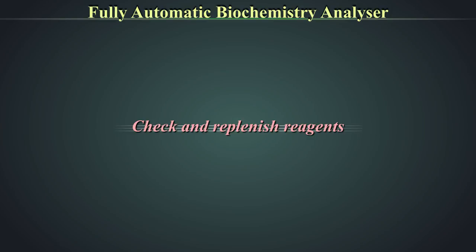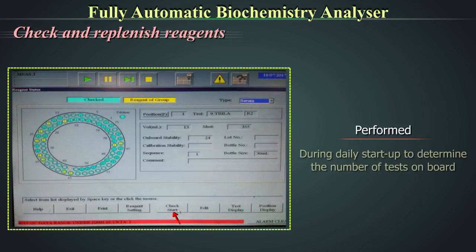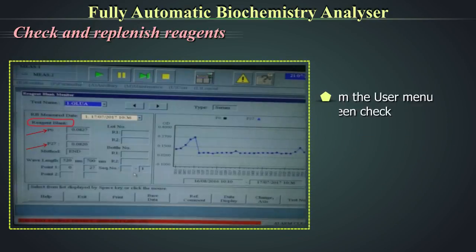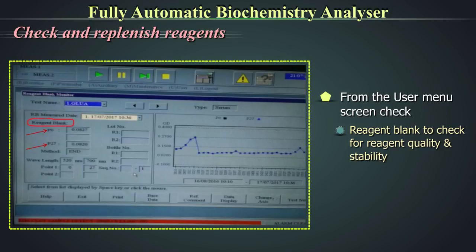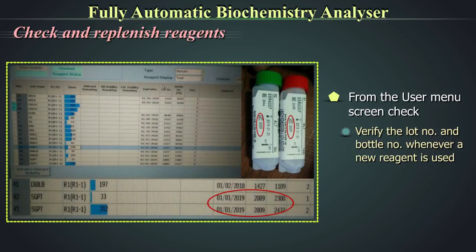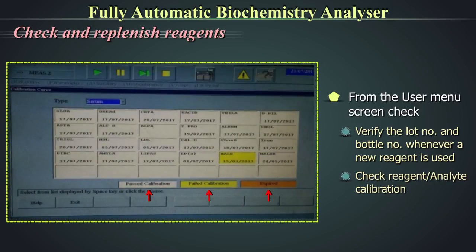A reagent check should be performed during daily startup to determine the number of tests on board and to update the status of the reagents. From the user menu screen, check the reagent blank for reagent quality and stability, reagent volume for adequacy so processing is not interrupted, and date of expiry of the reagents. Verify the lot number and bottle number whenever a new reagent is added. Check for reagent calibration.